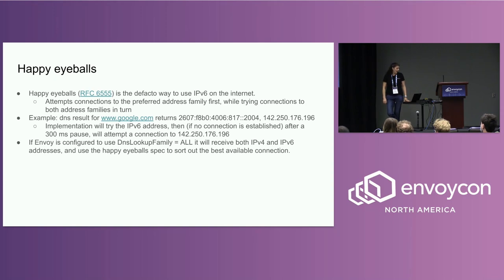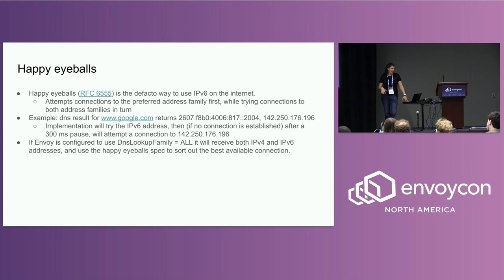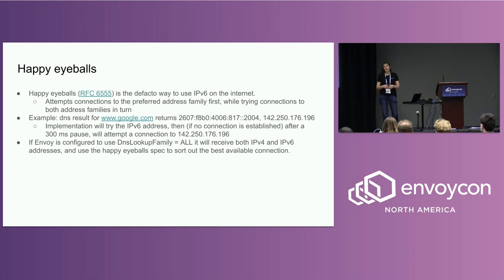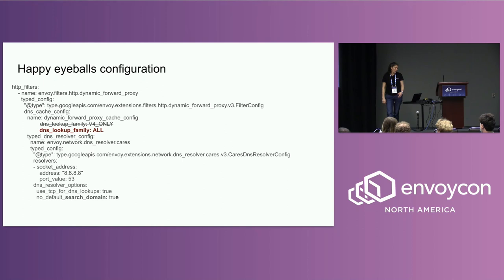The last cool feature we added was Happy Eyeballs. Happy Eyeballs is the de facto way to use IPv6 on the internet — it basically attempts connections to preferred address families while trying connection both to IPv4 and IPv6. From my desktop, doing a DNS lookup for google.com, I get a V6 address and a V4 address. The implementation will try V6 first, and if no connection is established — say my ISP is blocking it — after a 300-millisecond pause, it'll attempt a connection to IPv4. This resolved a lot of issues on various carriers and networks where you get both addresses resolved but only one works. To use this, all you do is configure Envoy to use DNS lookup family all, so it'll resolve not just one but often multiple V4 and V6 addresses. It can also be very helpful when migrating across networks to try different endpoints since the route to one may be blocked.